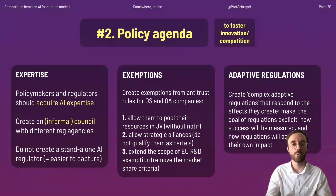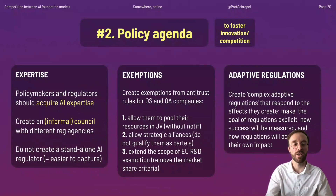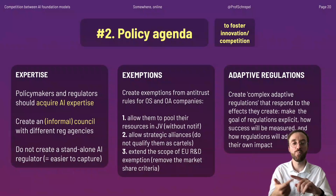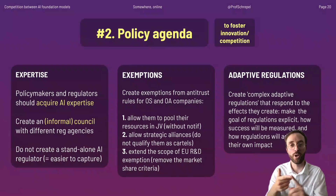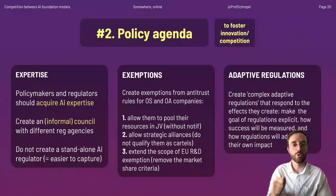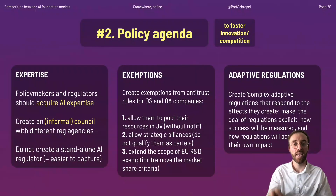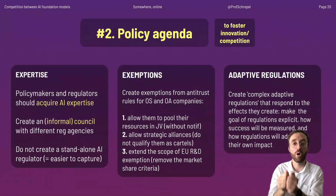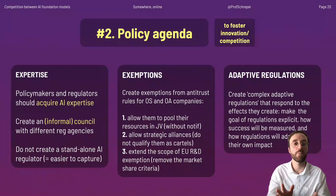Fourth, and more specific to antitrust, we think exemptions should be created for open access and open source companies. We may want to allow those companies to pool their resources in joint ventures without having to notify that as a merger, and allow strategic alliances between those companies without calling it a cartel. We may also want to extend the scope of the R&D block exemption so that companies can more easily cooperate and compete against the large players.